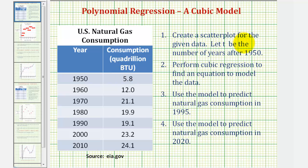Number one, we're asked to create a scatter plot for the given data and let T be the number of years after 1950. Then we'll perform regression and then we'll make predictions using our model for 1995 and 2020.